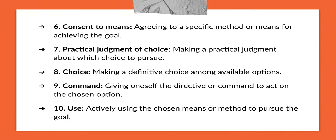We now deliberate: which of these two is okay for us? The seventh one is practical judgment of choice — making a particular judgment about which choice to pursue. We now have two choices: asking money from parents or working for it. Is it really good to ask mom for money, or should we work and save enough money and then buy the phone? This way you practically judge the choices available to you.